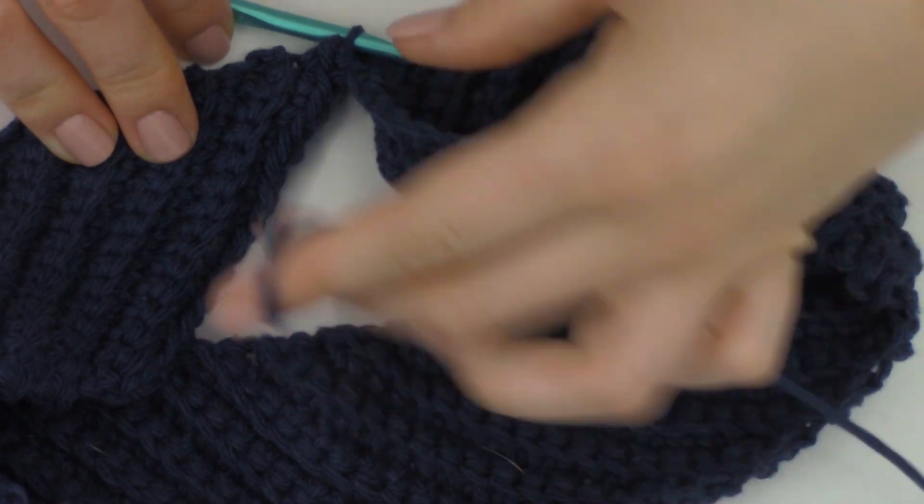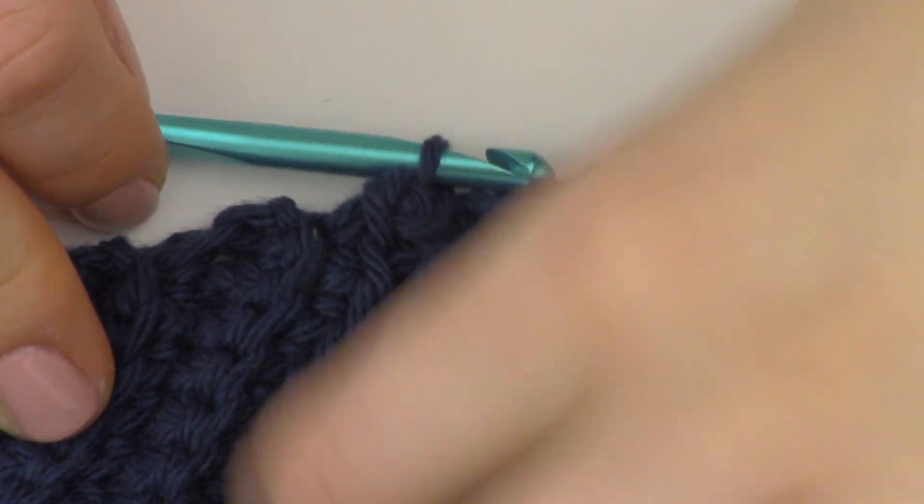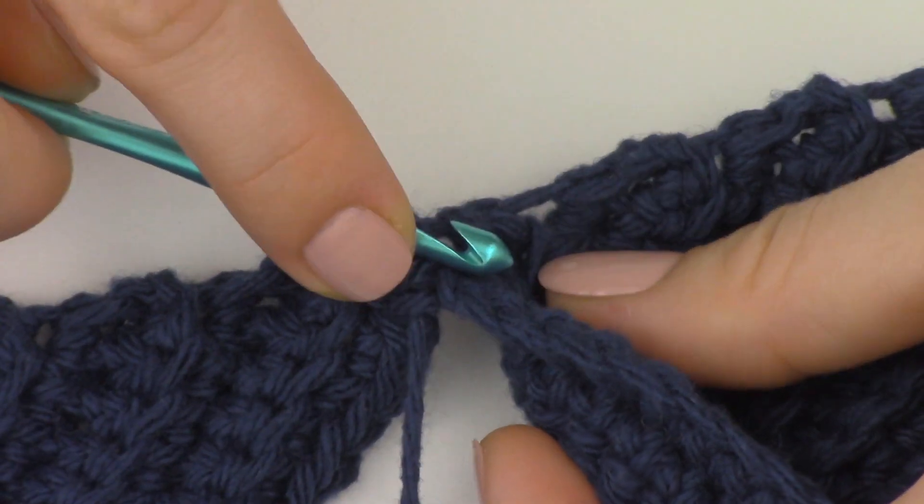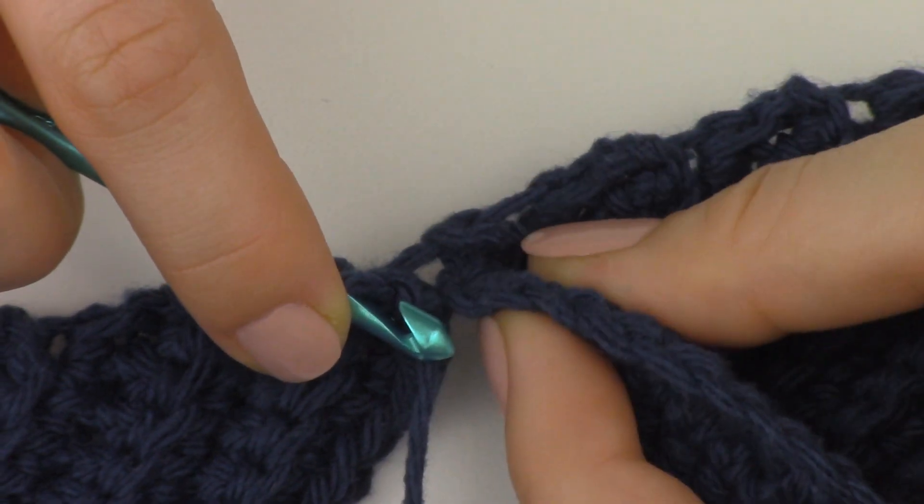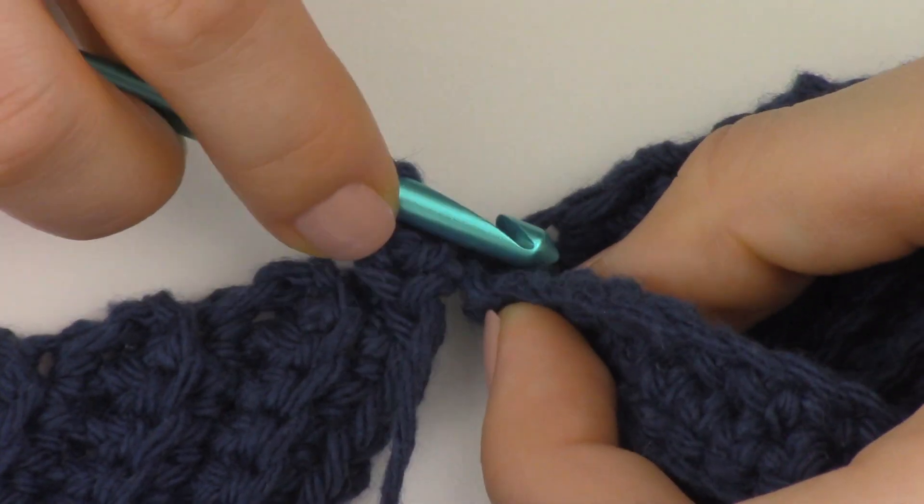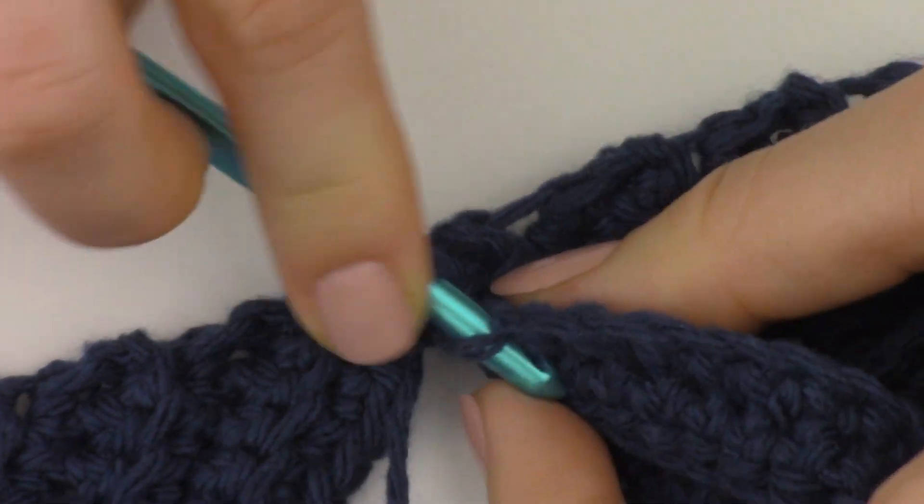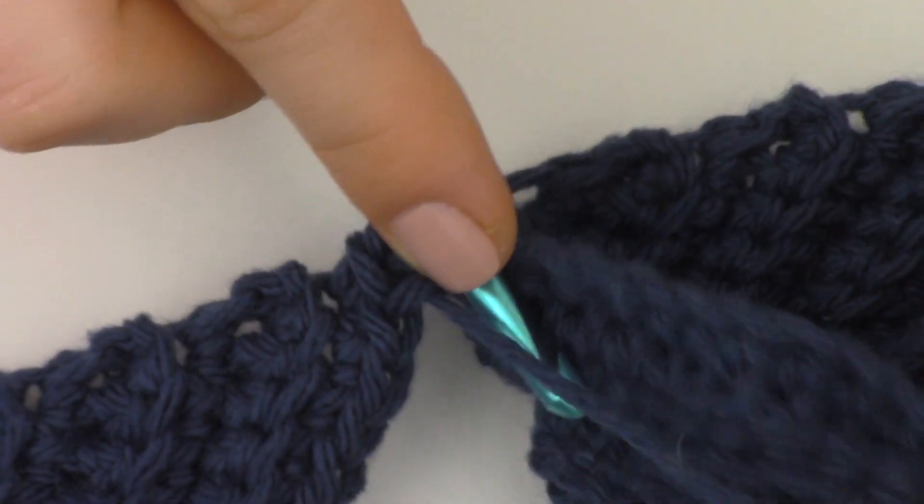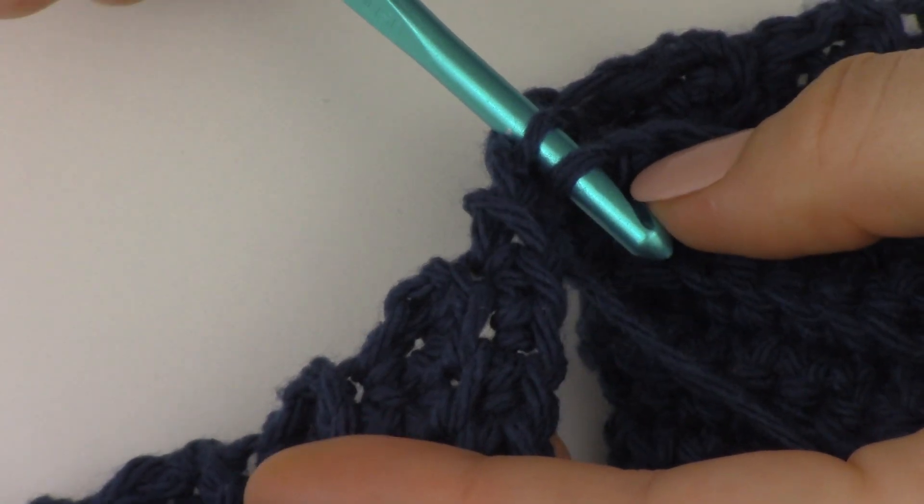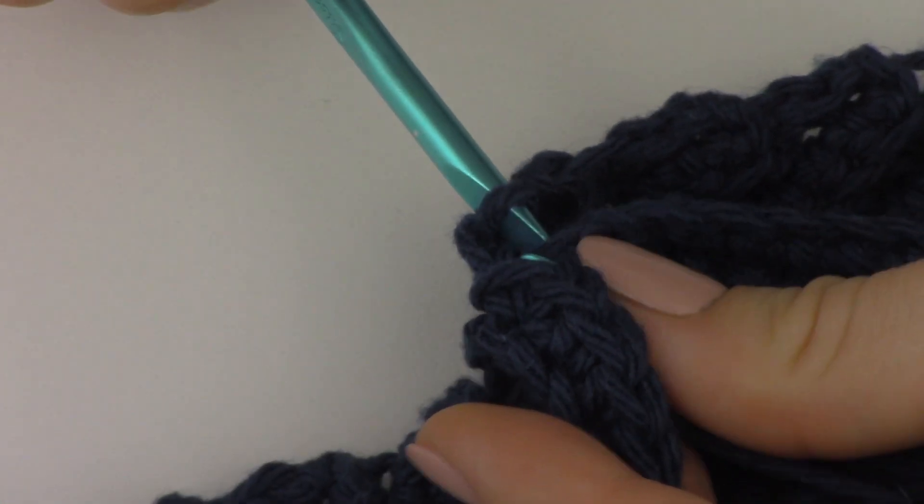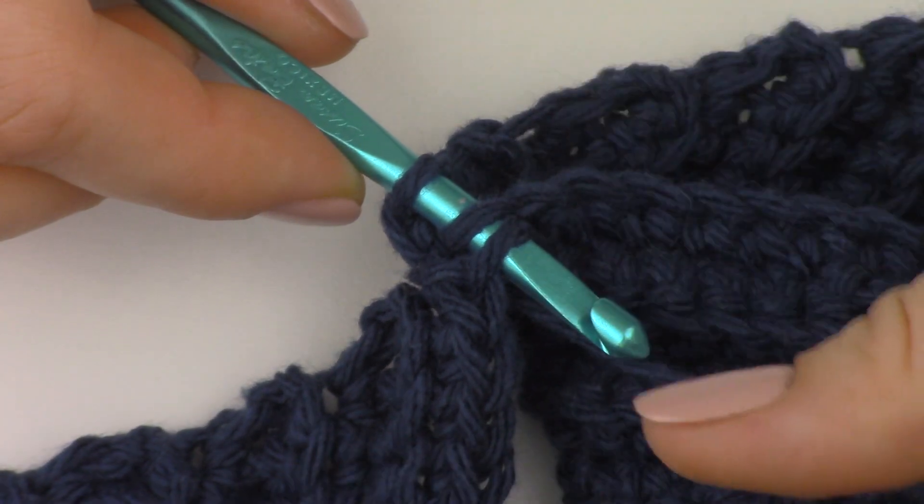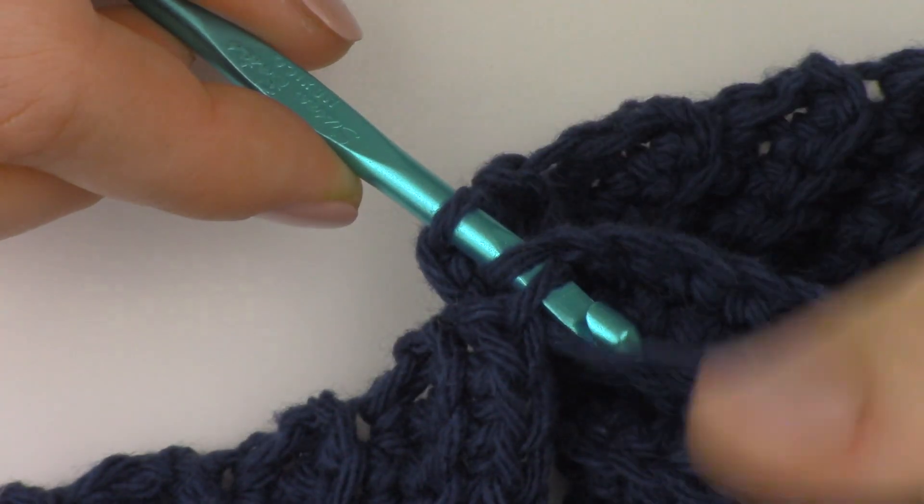So let's do this again. I'm going to zoom in just a little bit more so that you can really see. So I am going to insert my hook into the next back loop. That's from one side. Now we want to get the back loop of the other side. We have three loops on our hook. I'm going to yarn over and pull through all three loops. That will create the slip stitch.